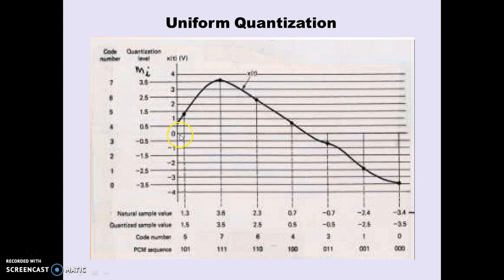Each voltage level has a midway horizontal line that defines the quantization state for that level. Consider the sample whose voltage is nearly 3.6 V. Since 3.6 V is very close to 3.5 V, this sample falls into level 7, so it is quantized to 3.5 V. The quantized sample value is designated as 3.5 V, the code number is 7, and the PCM sequence is 111, which is the binary equivalent of 7.